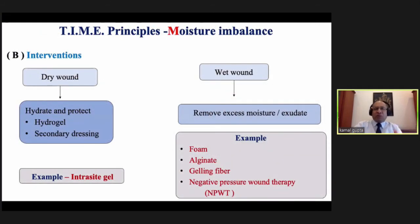If it is a dry wound — like simple eschar on a small area — the dressing of choice is hydrogel, for example Intrasite Gel. But if it is a wet wound, the most important step is to remove excess moisture and exudate — using foam, calcium alginate, gelling fiber, or most importantly, negative pressure wound therapy called VAC. I'll cover VAC in the coming slides.